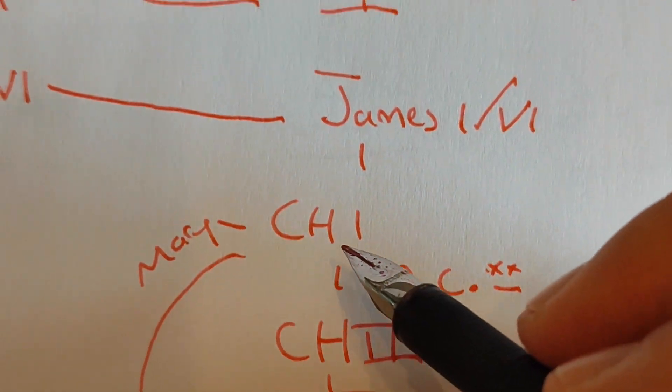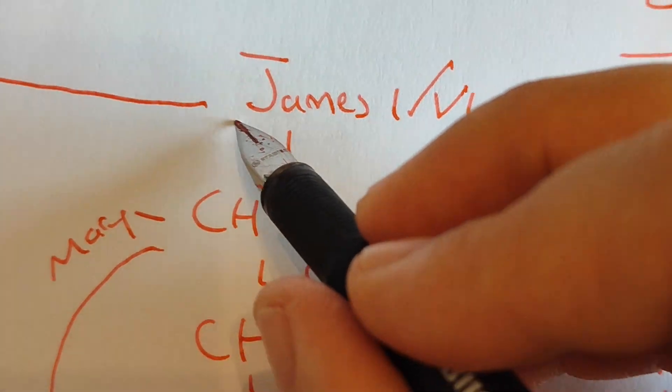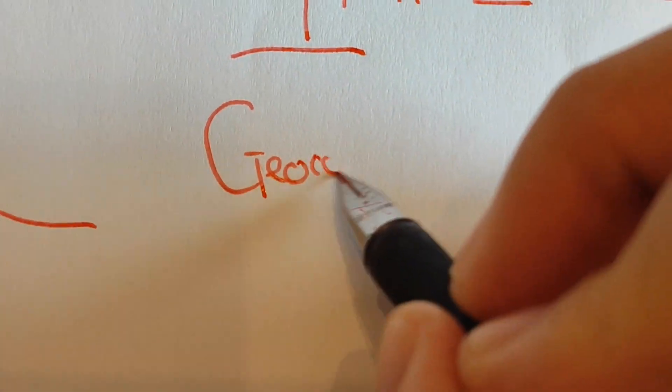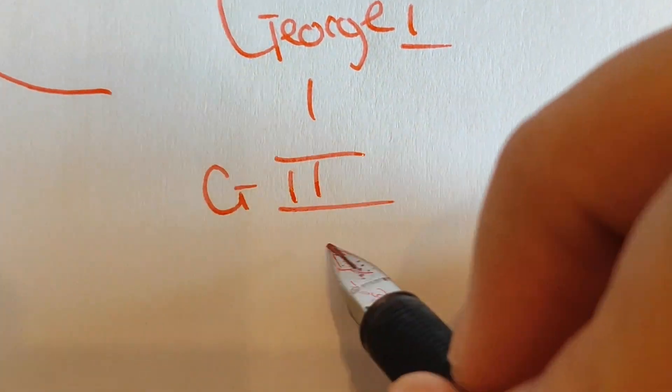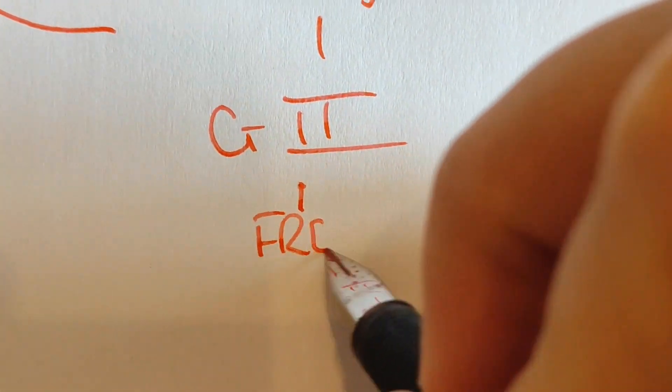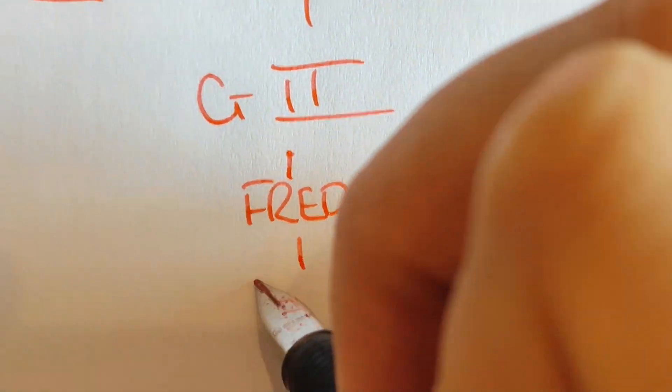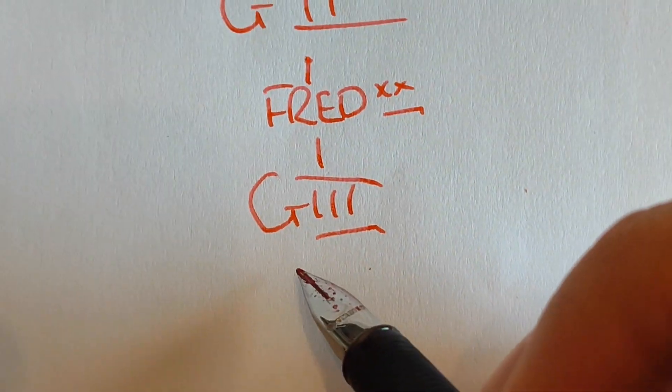They had to go all the way back to find a descendant of James I, who was a Protestant German called George of Hanover, who became George I. And he had a son called George II, who had a son called Frederick, but Frederick died before he could become king. But his son became George III.